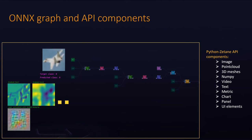When you send an ONIX graph to the Zetane engine you can look at its architecture and access all the tensors, but you can also send images, point clouds, 3D meshes, numpy arrays, text, different charts, panels, and UI elements to the engine to create a scene that helps you investigate and inspect your models.